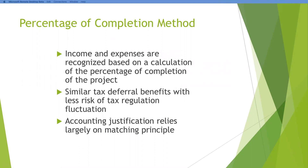In the percentage of completion method — this is what we're talking about today — we're recognizing the income and expenses based on some sort of calculation of the percentage of completion on the project. We have to have some basis for knowing how far along we are in the project, and then based on that we're going to go ahead and recognize those income and expenses. That's relying on the matching principle where we're recognizing income and expenses in the same period. And there are some tax deferral benefits with this because you're not billing the entire long-term contract all upfront.